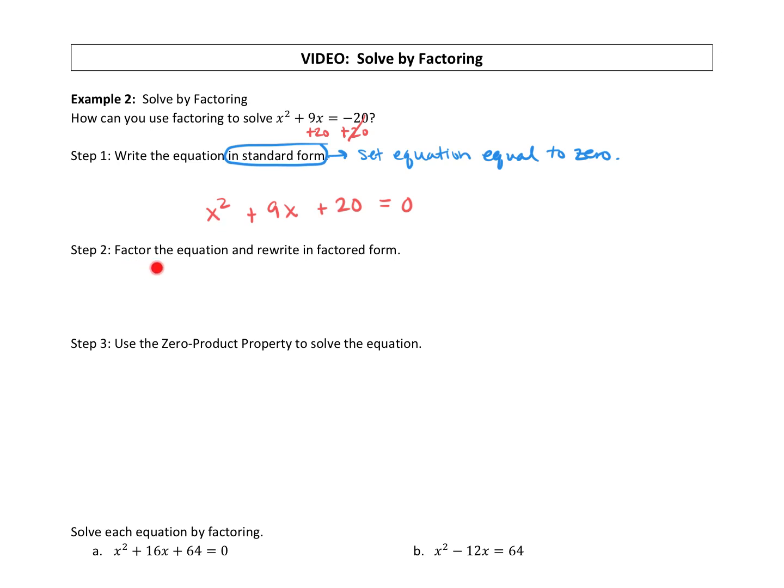Alright, so step 2, factor the equation and rewrite in factored form. So this is our trinomial. Let's take note that it's an x squared term. When you have a number in front of the x squared, we have to think through how that changes our factoring. But in this case, it's just an x squared. So we can go right to our c value. We're looking for factors of c that add up to b.